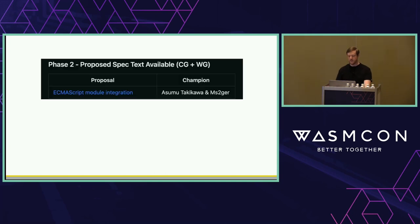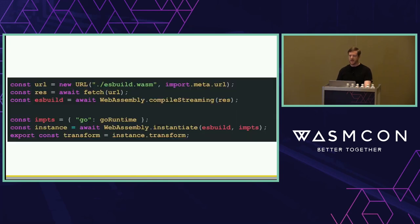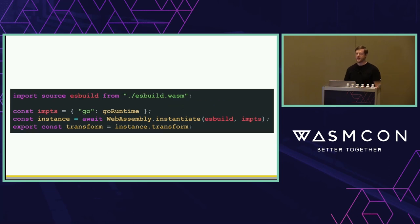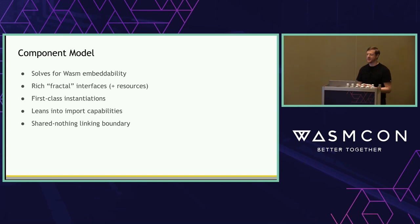To reduce this glue, we have the ECMAScript module integration for WebAssembly, which integrates WebAssembly with the ES module system. More recently, we have the source phase imports proposal, which allows importing uninstantiated WebAssembly modules. Using this approach, we can replace this glue with a direct source import of ESBuild — you import ESBuild as a module through the module system, it's statically analyzable, and we just have to instantiate the runtime. But we still have that runtime instantiation step.